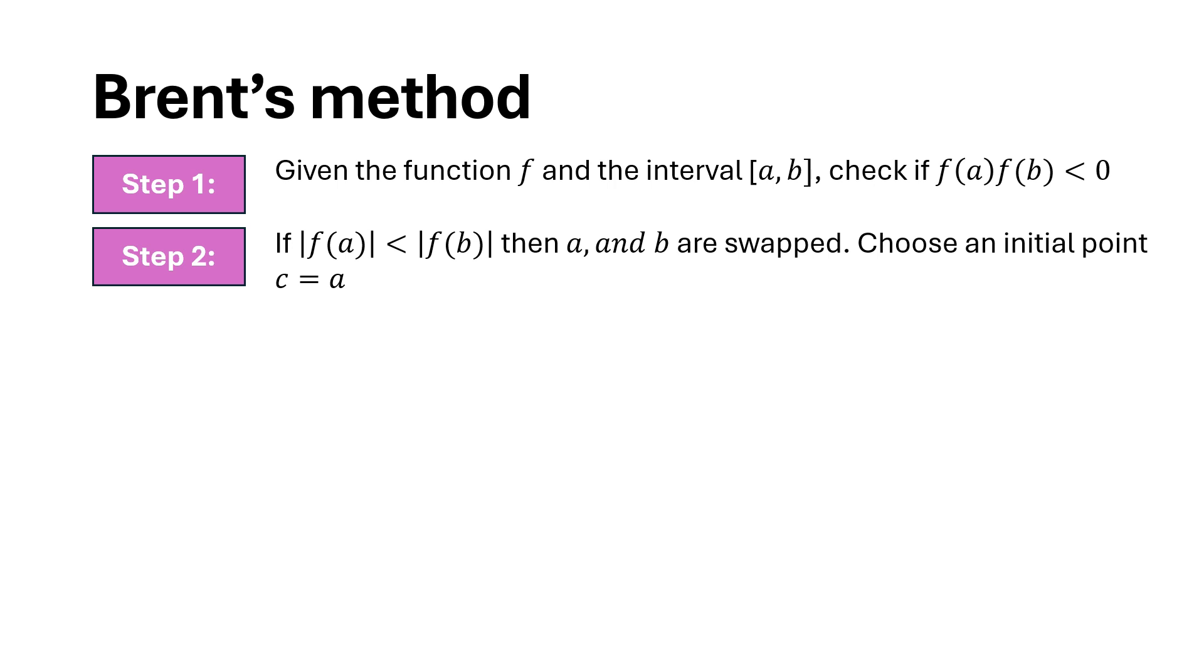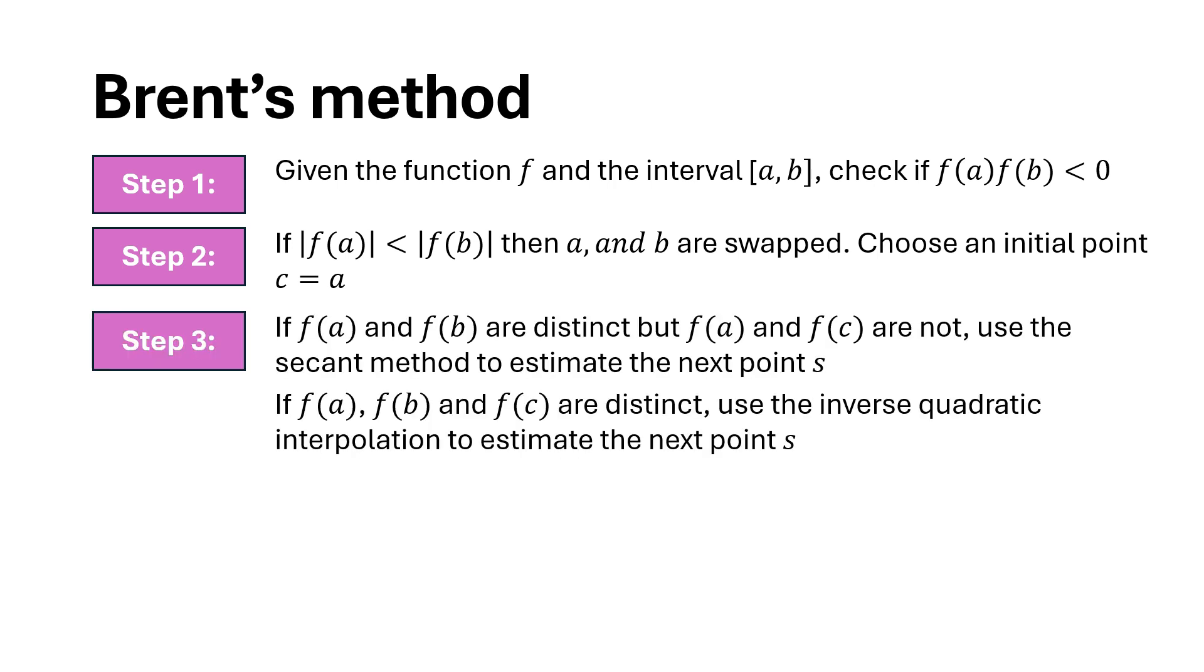Now we have three points. We can use inverse quadratic interpolation to find the next estimate provided that f(a), f(b), and f(c) are distinct. If they are not, we will use the secant method instead.